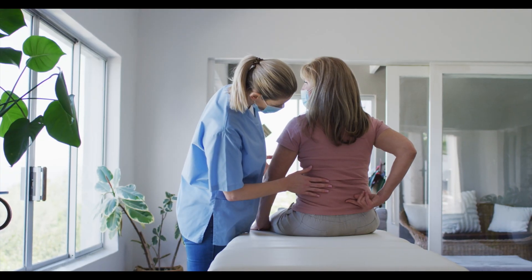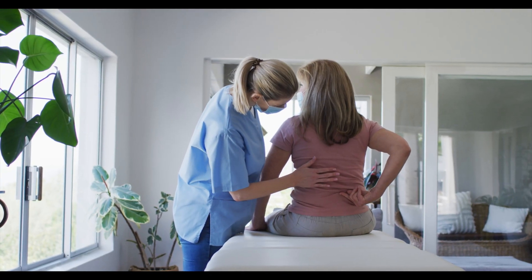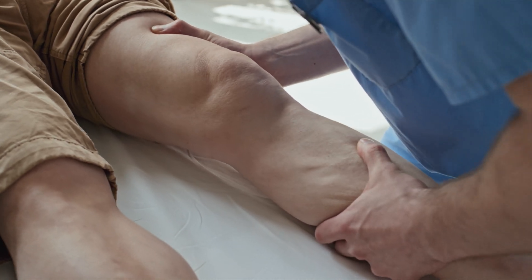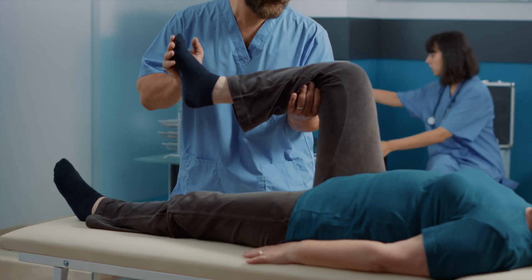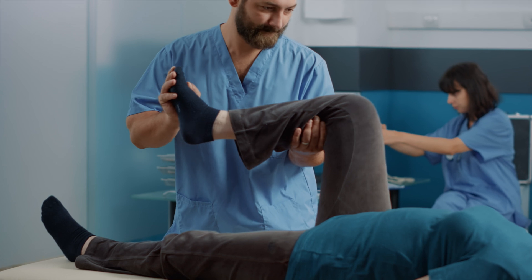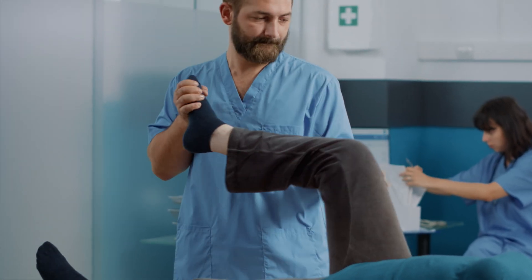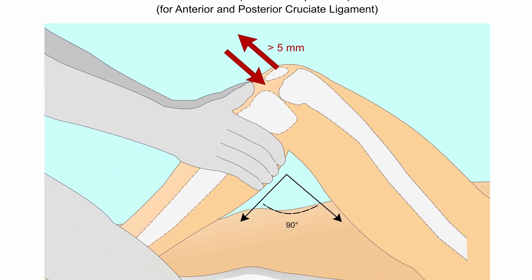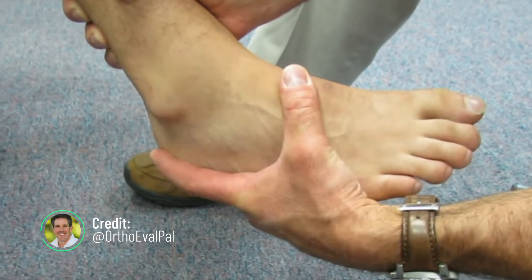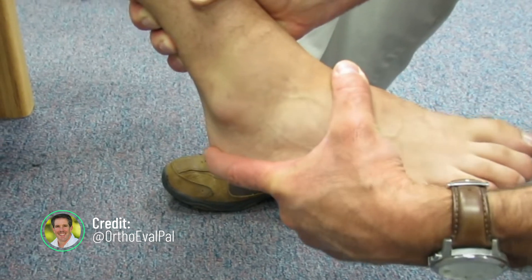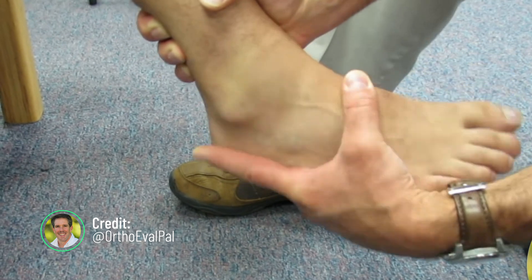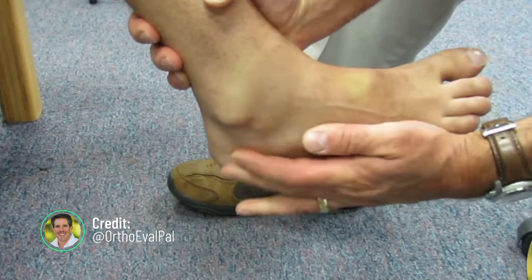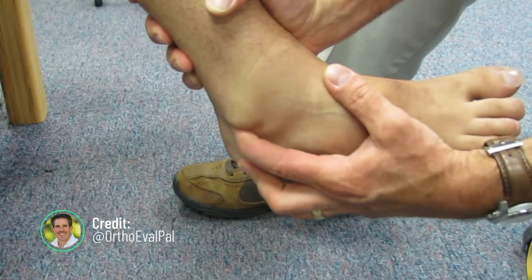The healthcare professional will also perform a physical examination of the athlete, which involves inspecting, palpating, and stressing the ligament in different ways, and evaluating the available range of motion at the affected joint. Ligament stress tests, like the anterior drawer test for the anterior cruciate ligament, or the talar tilt test for the ankle ligaments, are good examples of special tests that the healthcare professional might perform to assess the integrity or involvement of these ligaments.